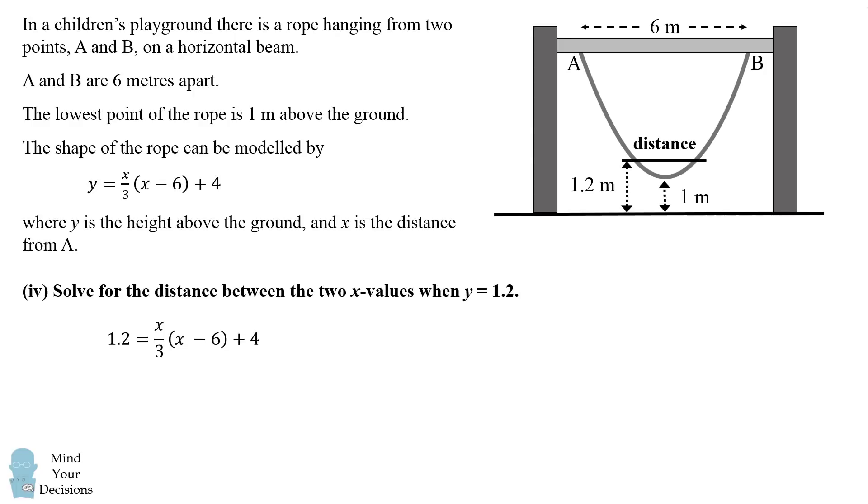We take our equation and we substitute in y equals 1.2. We have 1.2 equals x over 3 times the quantity x minus 6 plus 4. We can then subtract 1.2 from both sides and we can expand out x over 3 times x minus 6. This becomes 0 is equal to x squared over 3 minus 2x plus 2.8.